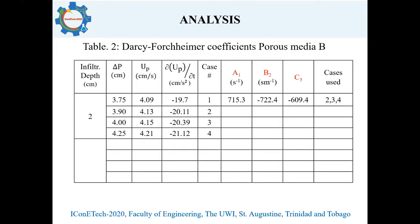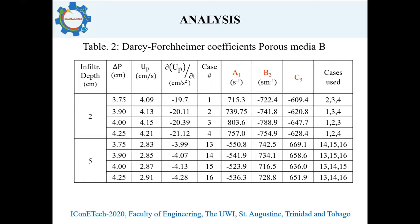However, when different data points are used at the same depth, some level of variation in A1, B2, and C3 is observed. This shows that the coefficients are not constant but in fact vary depending on the pressure difference across the unsaturated sample. A similar analysis at a different infiltrated depth of five centimeters also shows that the coefficients A1, B2, and C3 vary between depths. Therefore, the Forchheimer coefficients for unsaturated flow applications not only depend on the pressure difference but also on the infiltrated depth.